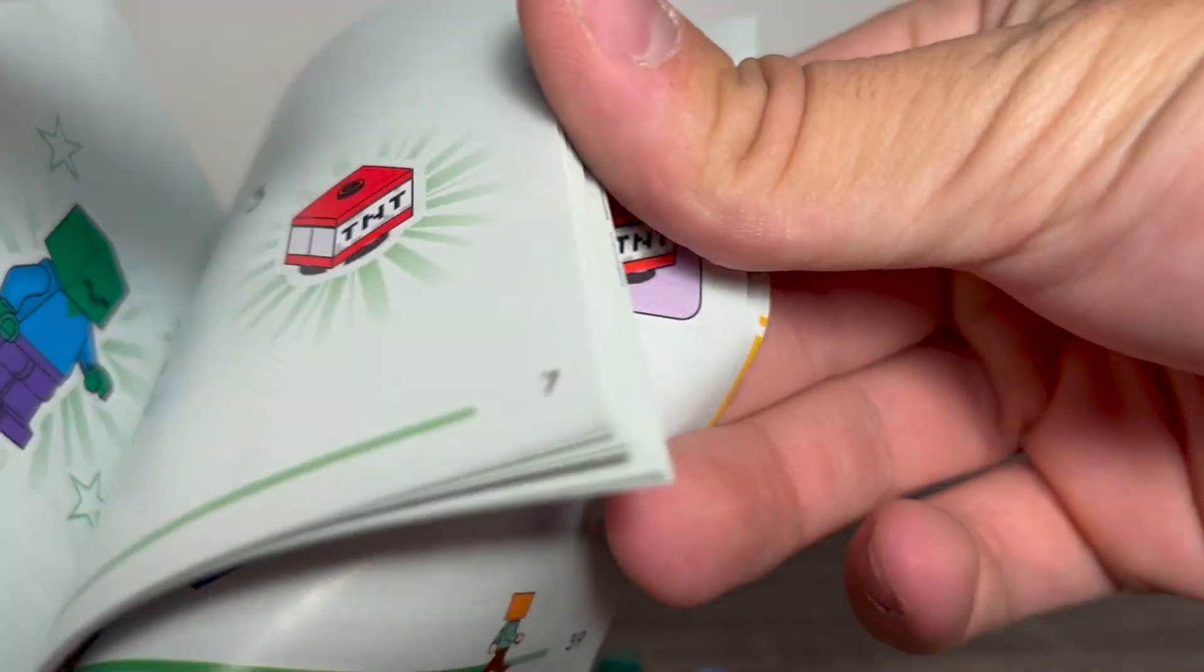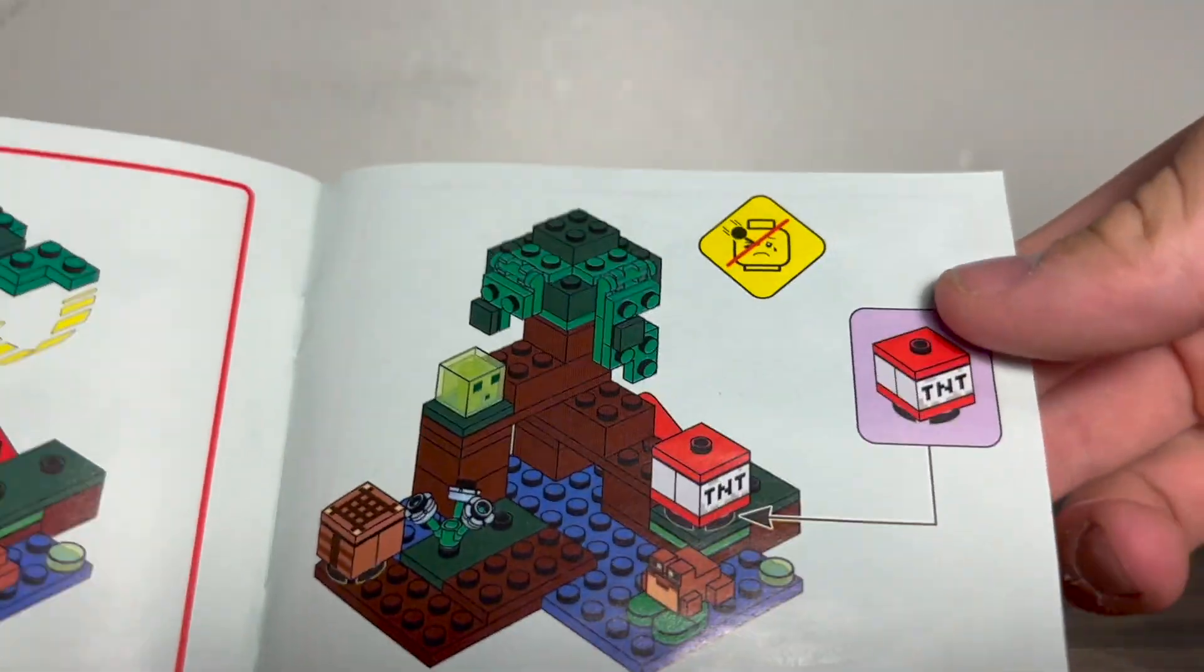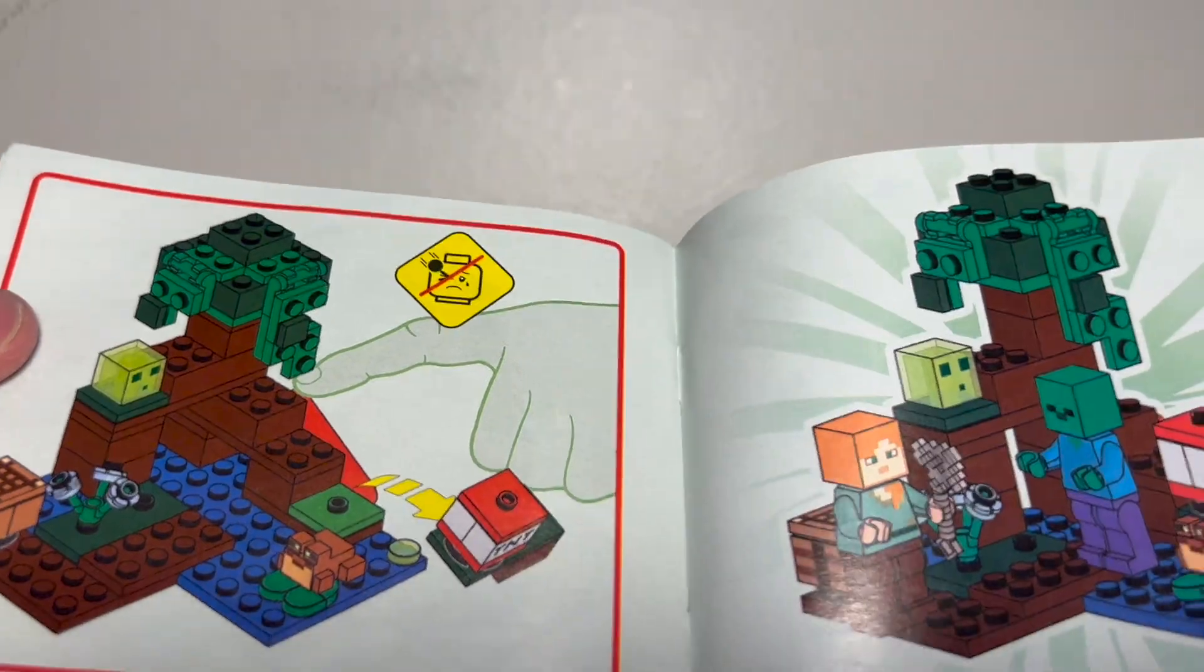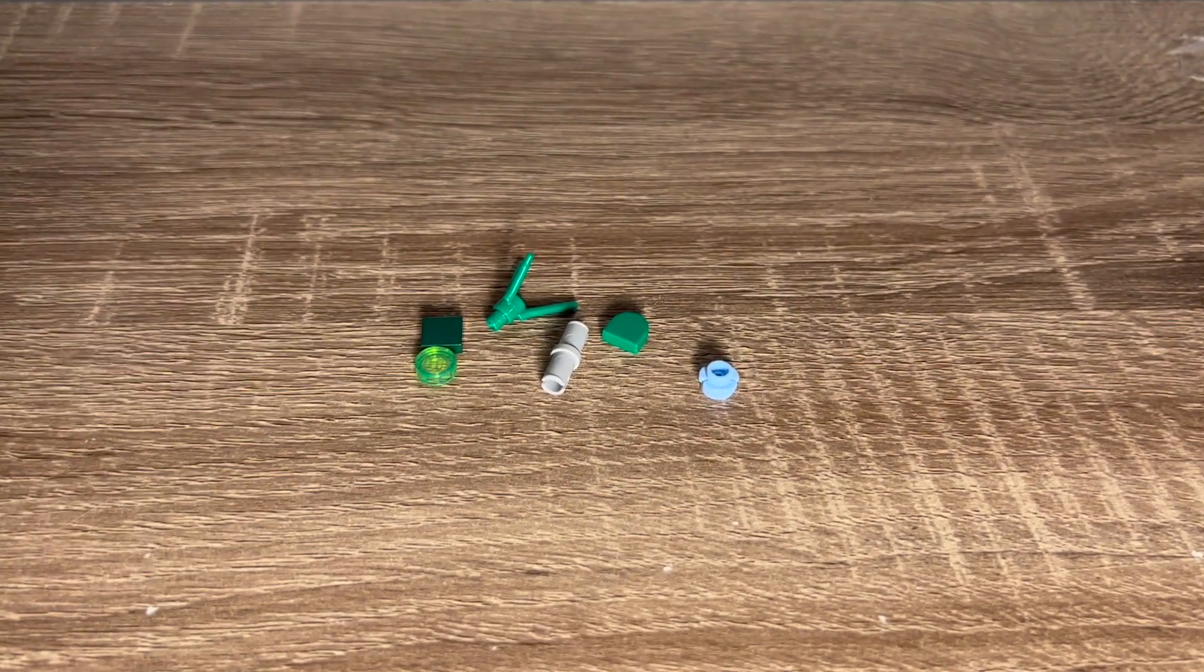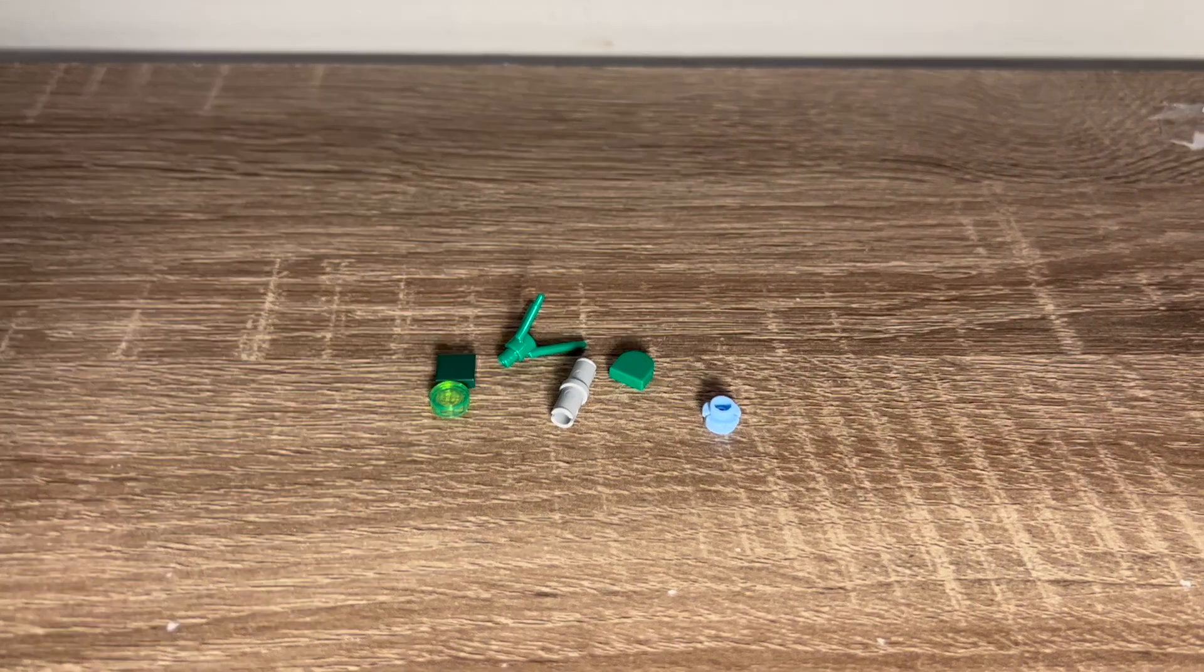So for the instructions, it obviously tells you how to build the set. Then when you get to the end, it shows the set all built up and the play feature. The piece count, and then the win. For the leftover pieces, there's only six. And the coolest one is probably that little slime ball piece. That's it for leftover pieces.